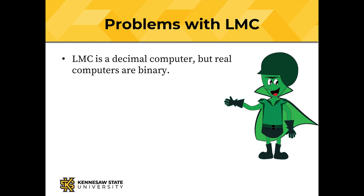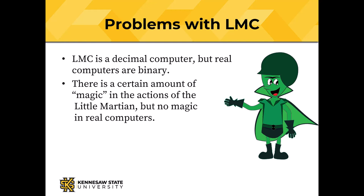The biggest problem is that LMC is a decimal computer, but real computers are binary. The fact that real computers are binary is important because the use of binary representation has a powerful effect on how data are represented inside the computer. It also explains why there are powers of two everywhere we look. There's a certain amount of magic in the actions of the little Martian, but there's no magic in real computers.